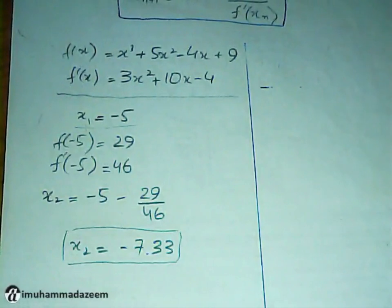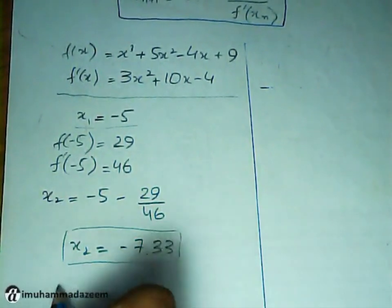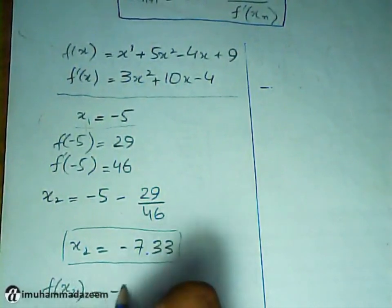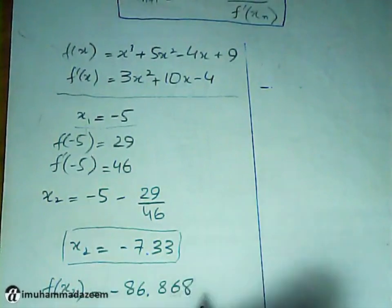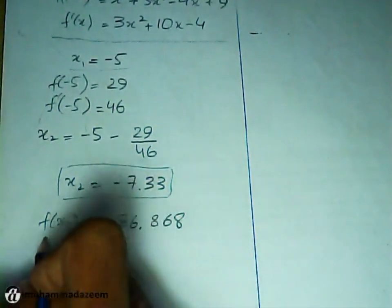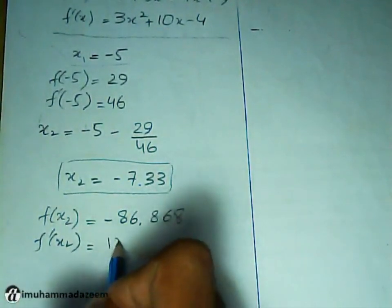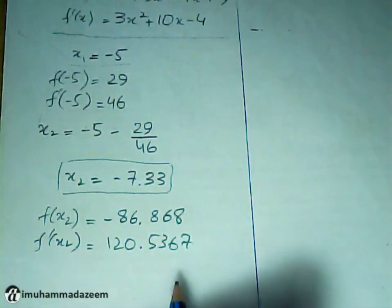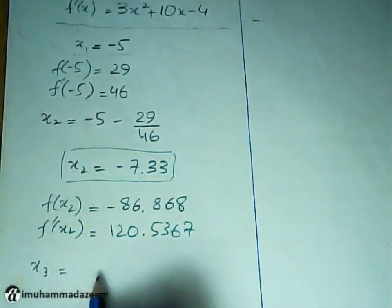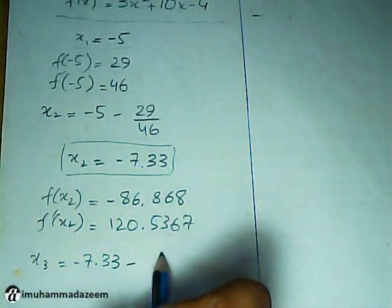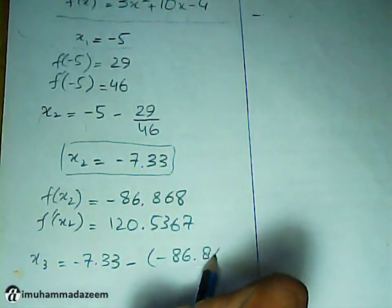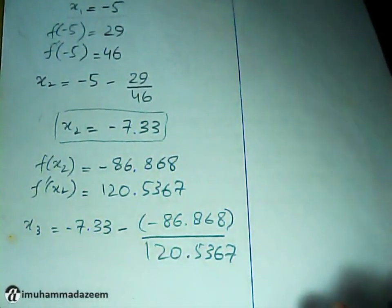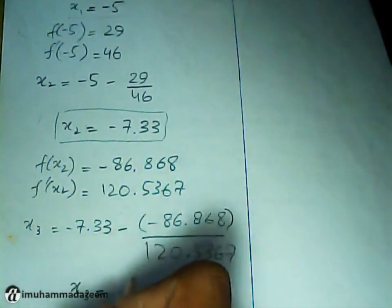This is our first iteration. So we can similarly find our X₃ by using function of X₂. First, putting the value of X₂ in the equation function, we get minus 86.868. Similarly, f prime of X₂ is going to be 120.5367. Again, putting the values in the formula: minus 7.33 minus minus 86.868 over 120.5367, and this value comes out to be X₃ equals minus 6.2944.